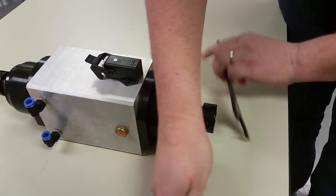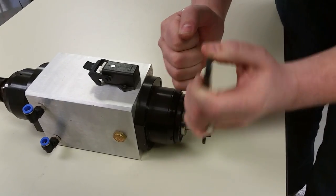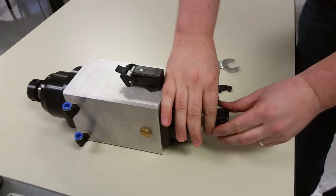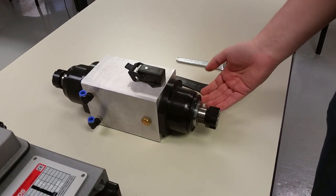Again, you would hand torque it until it was tight, but be careful here not to over torque this because you could end up ruining the threads on the end of this spindle shaft. And that's how you would change out a tool on a collet spindle.